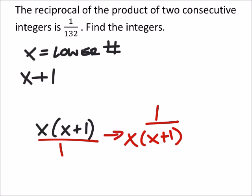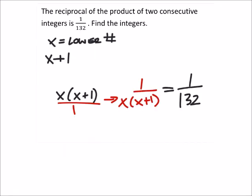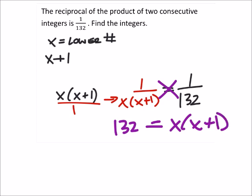And it told us that the answer to that is 1 over 132. And here's why you can do that: if we cross multiply, we get 132 times 1, which is 132, and 1 times x times x plus 1, which is just x times x plus 1.